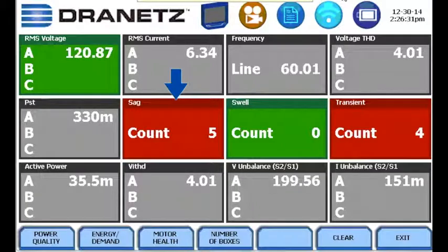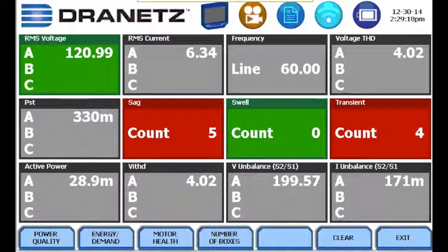The count indicates the number of times that event has occurred since monitoring has started. For all other parameters including THD, power, and other parameters, a yellow color indicates that the parameter has crossed the high or the low limit and the red color indicates that the parameter has crossed the very high or the very low limit.